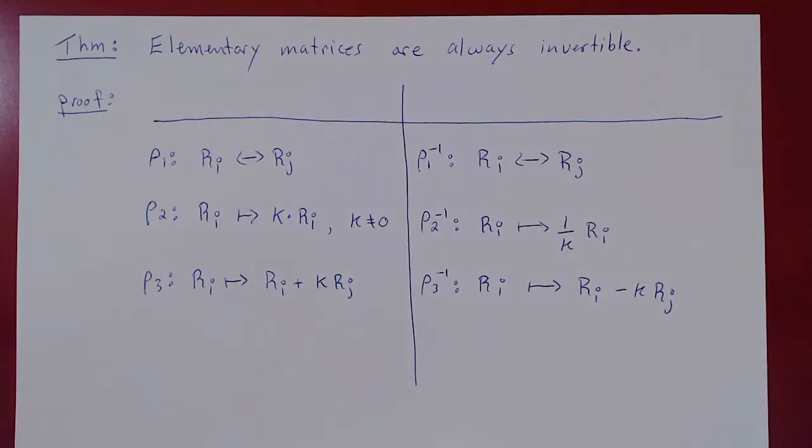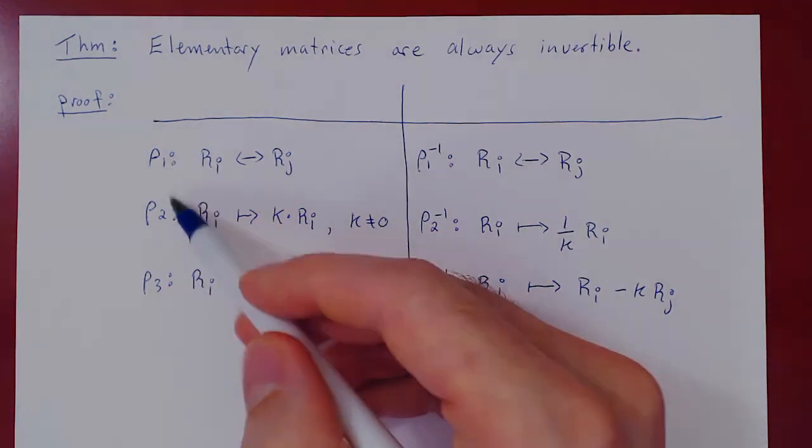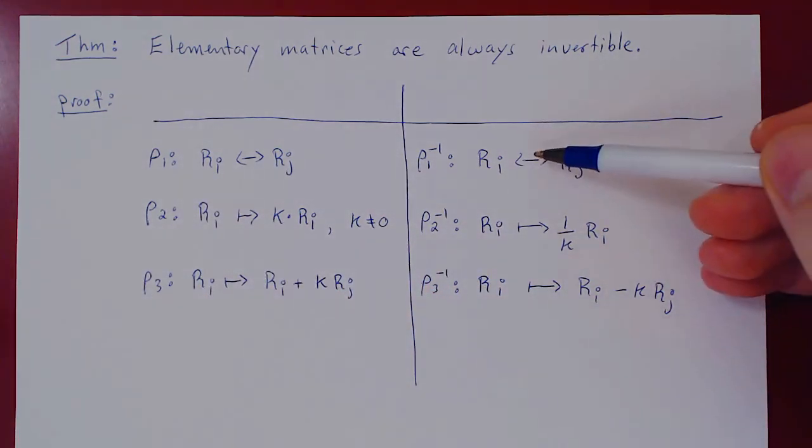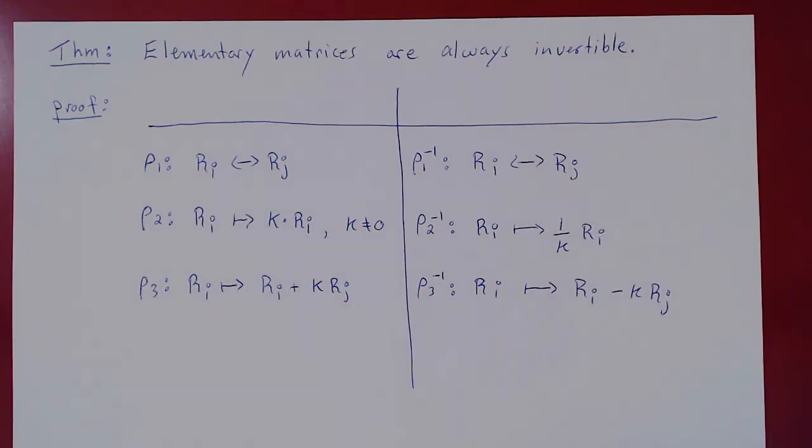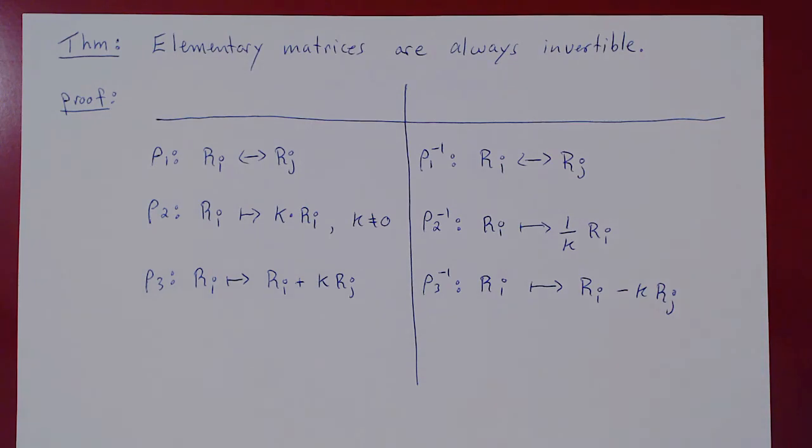And because every elementary matrix is constructed from one of these three row operations, each row operation is invertible. Therefore, every elementary matrix is invertible. That's it.